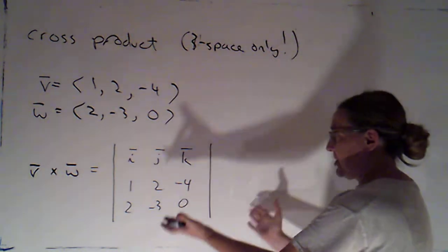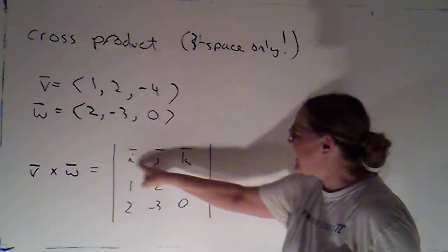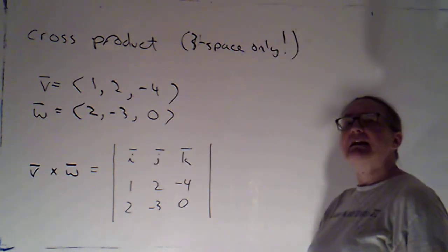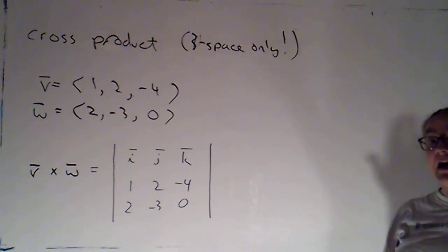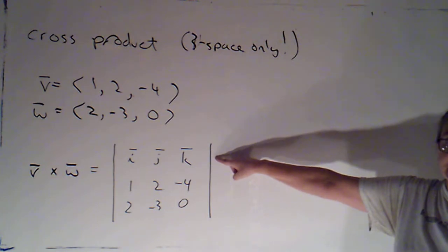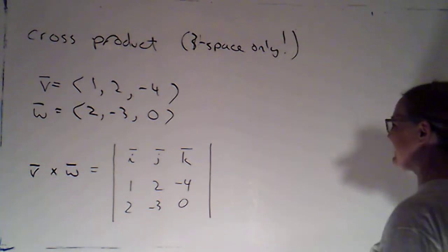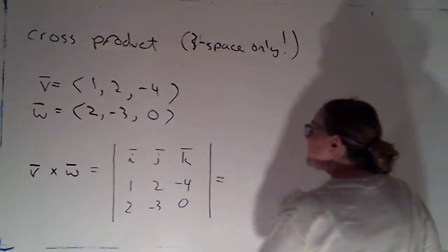Now, I can't calculate the determinant of this, because the determinant is a number, and not all of these entries are numbers. But I can calculate what we call a symbolic determinant. To do that, I'm going to have to expand on the first row. The first row is the special one, it's the weird one, it's the one that has vectors as its entries instead of numbers.